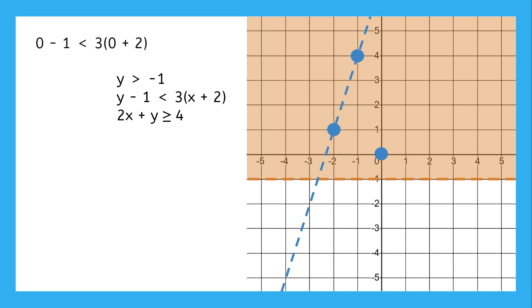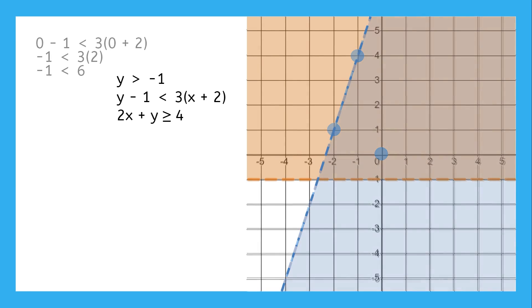Use the test point (0,0), and we get the true statement, negative 1 is less than 6. So we shade the side with that point.